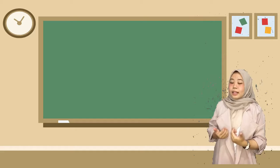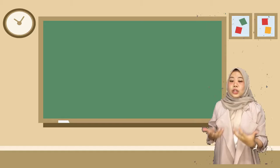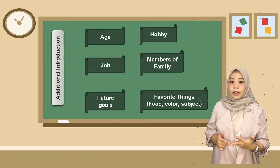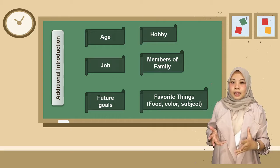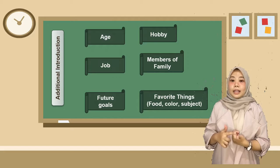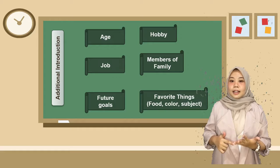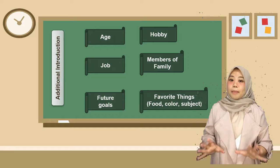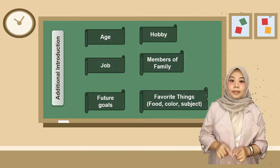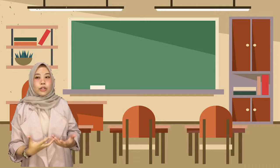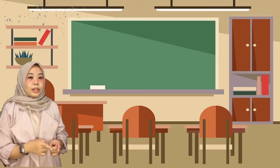Selanjutnya, untuk menyebutkan identitas kita, kita bisa berbagi informasi lainnya seperti age, hobby, job, family member, future goal, atau sesuatu yang favorit. Jadi setelah memperkenalkan identitas diri, kalian bisa membagikan beberapa informasi tambahan seperti umur, hobi, pekerjaan, keluarga, cita-cita, atau hal-hal yang kalian sukai. Ini tidak harus semuanya — kalian bisa pilih beberapa hal yang kalian ingin bagi kepada teman kalian. I will show you how to share additional information to your friends in English.